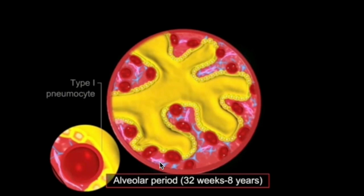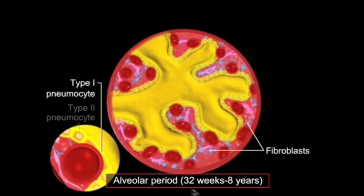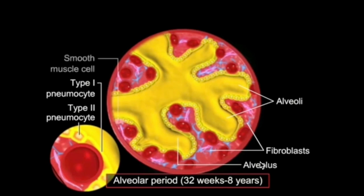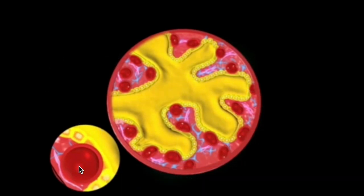Finally, we have the alveolar stage, from the late fetal period all the way up to eight years of age. This is when the lungs become fully functional: pulmonary epithelium and capillaries get thinner, surfactant production increases, and everything becomes more conducive for gas exchange.